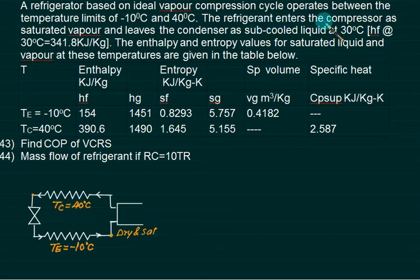The refrigerant enters the compressor as saturated vapor and leaves the condenser as sub-cooled liquid at 35 degrees, with Hf equal to 30. Condenser is at 40 and this is 30, so temperature decreases - this is called sub-cooled. This is our H3.